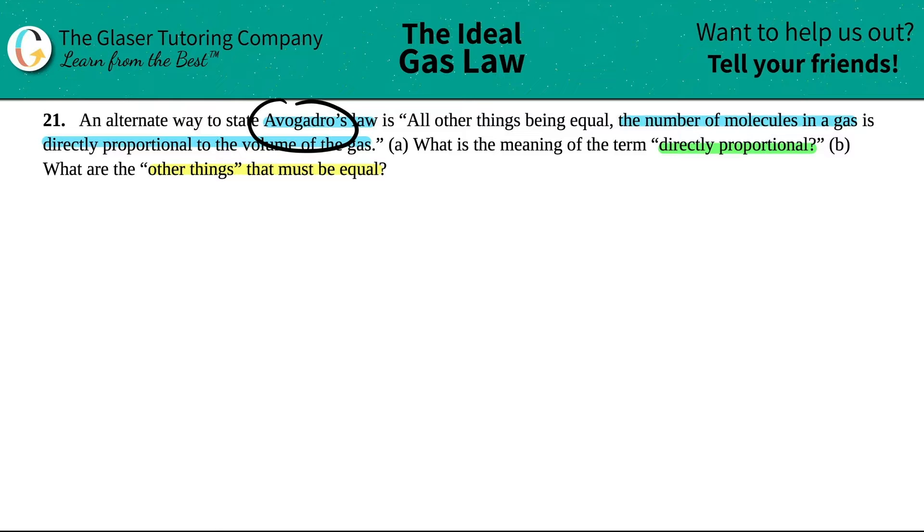Okay, so we have our boy Avogadro, right? You thought that you were going to get rid of him in the beginning of chem. Avogadro's number, right? But he comes back. Anyway, we just have to figure out Avogadro's law in terms of gases. In this case, he loves to talk about those molecules. Avogadro's number is 6.022 times 10 to the 23rd molecules equals one mole.